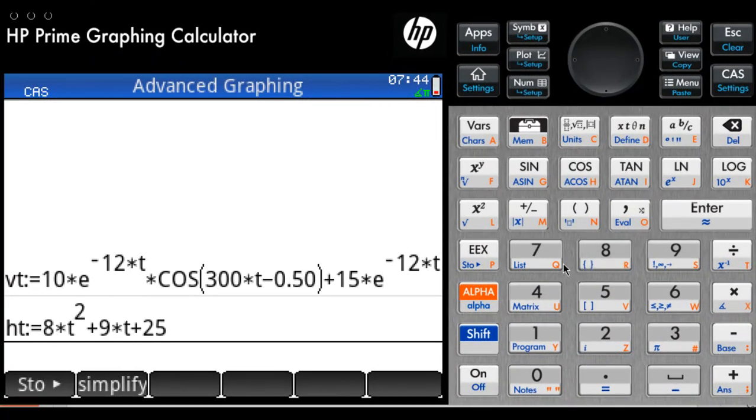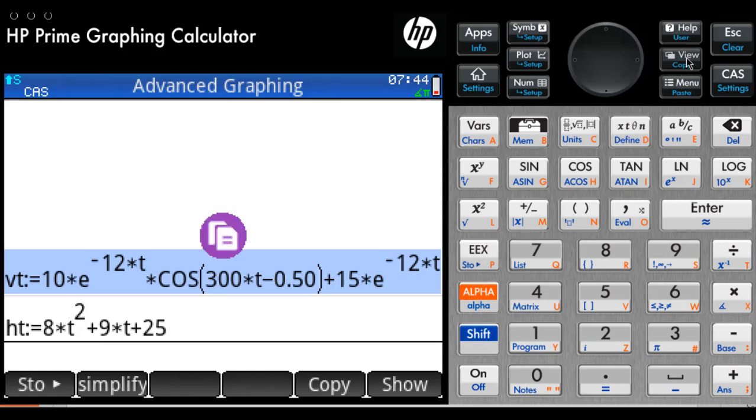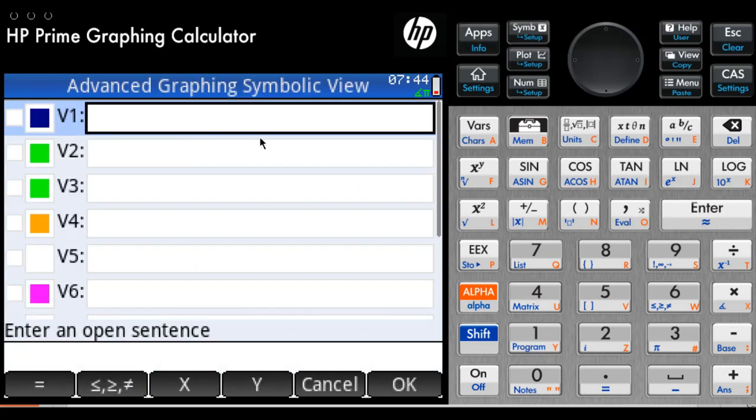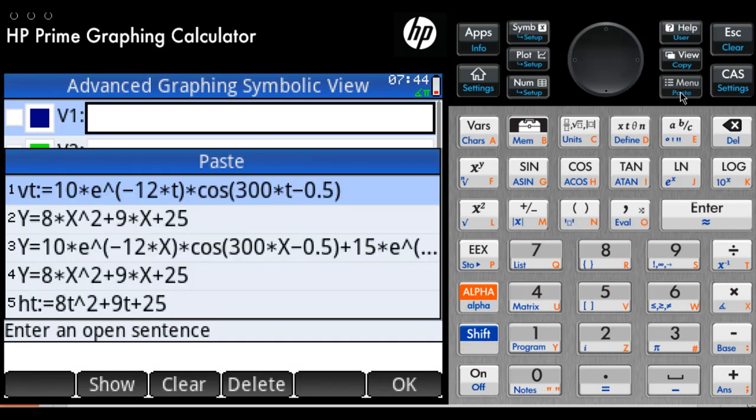Let's go through the same process for the other one. First step, select the plot that we want, and we copy. Not with this one. We copy it with shift copy, all the way up here. Shift copy. It goes to the buffer. Now we go to the app, advanced graphic, double click. And shift paste, shift paste. Select the one at the very top, double click.